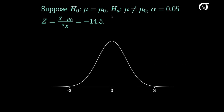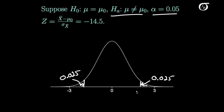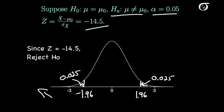If our alternative hypothesis is two-sided at an alpha level of 0.05, we split alpha evenly into the two tails: 0.025 in each tail. As we've seen previously, the critical Z-values are 1.96 in the right tail and minus 1.96 in the left tail. In this case, if we observe a Z-value of minus 14.5, which is way out in the left tail, we can reject the null hypothesis at alpha of 0.05.